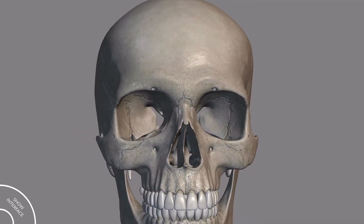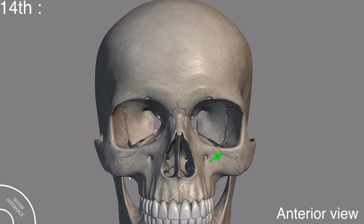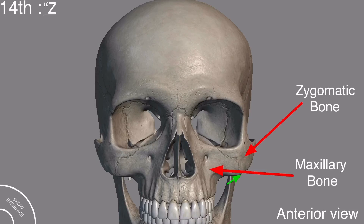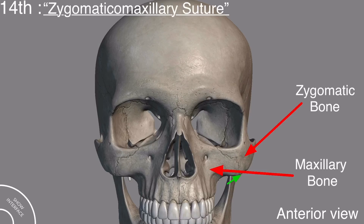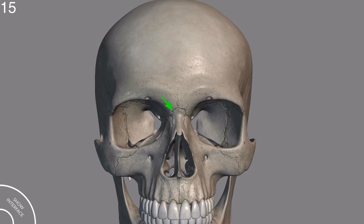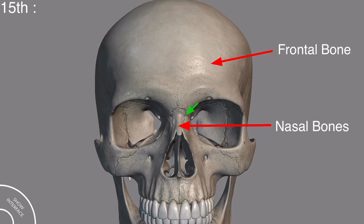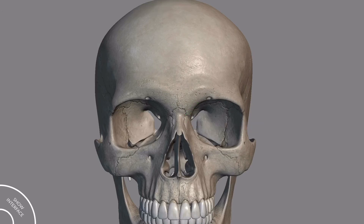Moving to the anterior view, the suture present between the zygomatic bone and the maxillary bone is called the zygomaticomaxillary suture. The suture present between the frontal bone and the nasal bones is called the frontonasal suture. Note that in this model the nasal bone is shown as one bone, but actually these are paired bones.